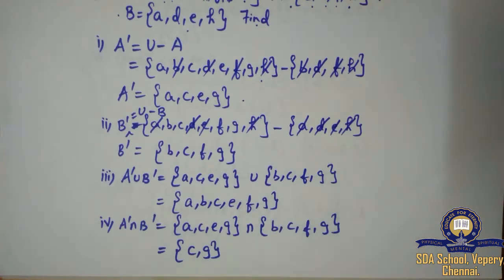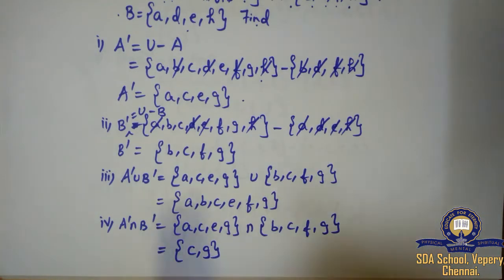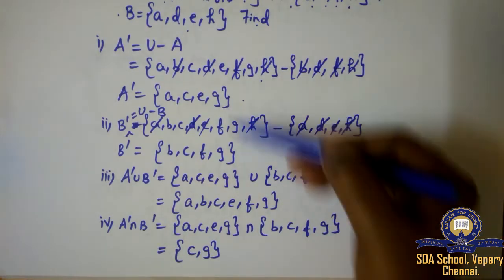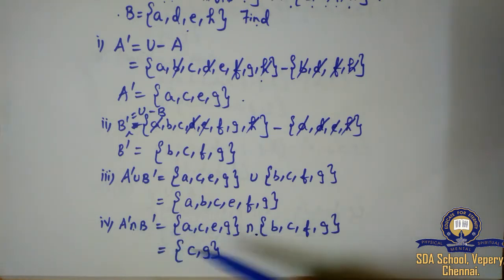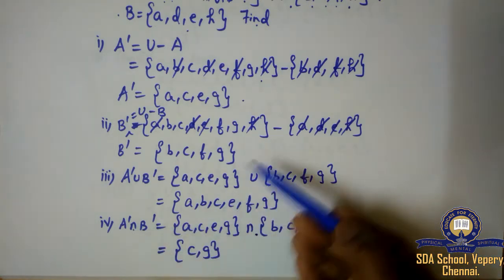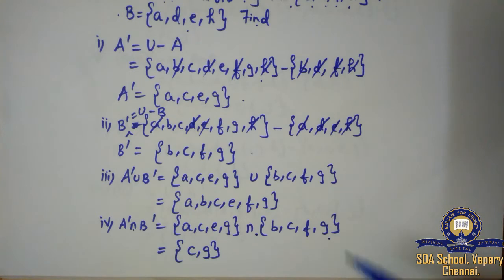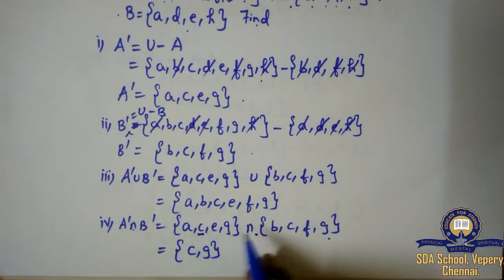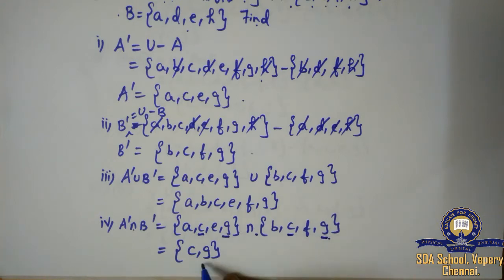Fourth subdivision: A dash intersection B dash. A dash is {A, C, E, G}, B dash is {B, C, F, G}. Intersection means common elements. C and G are common in both. So A dash intersection B dash equals {C, G}.